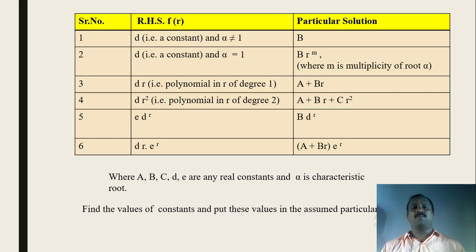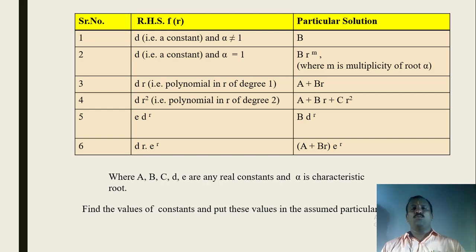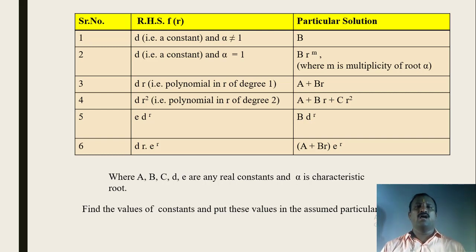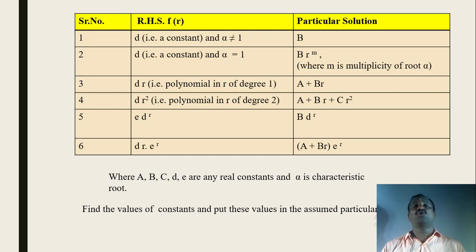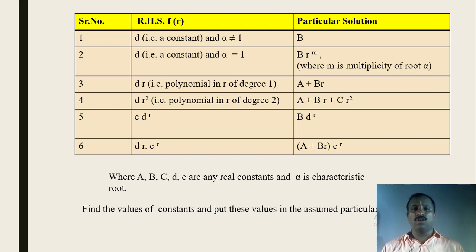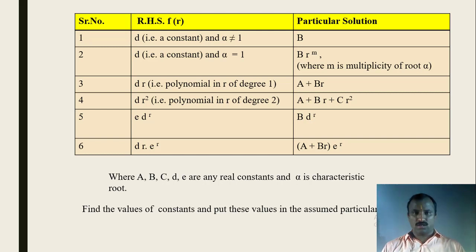Now the required procedure: find the homogeneous solution, find the particular solution, and then add them together. The addition of the homogeneous solution and the particular solution gives the required general solution, or total solution, of the given recurrence relation.